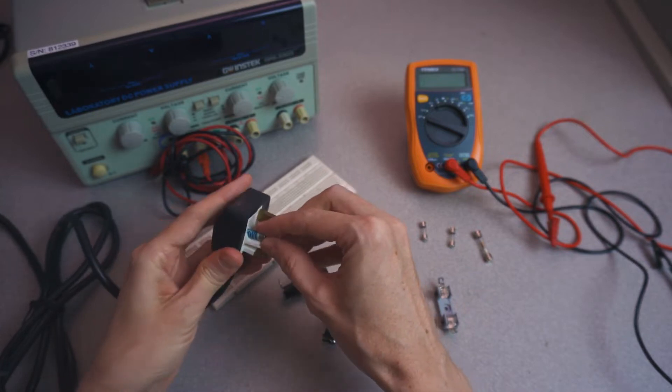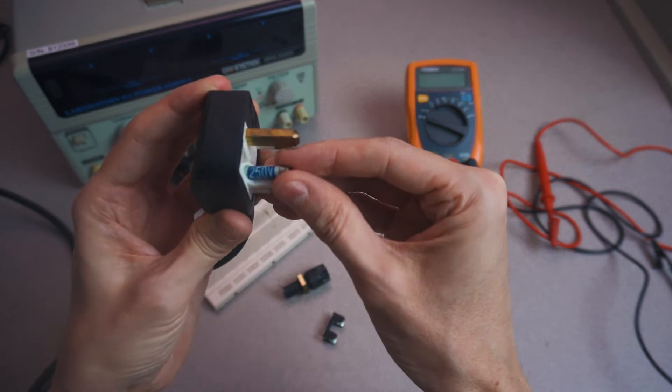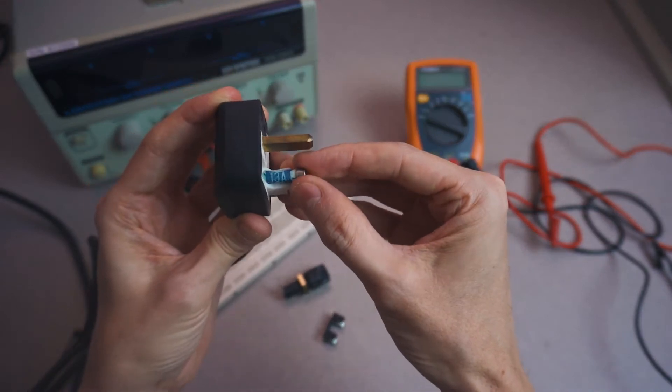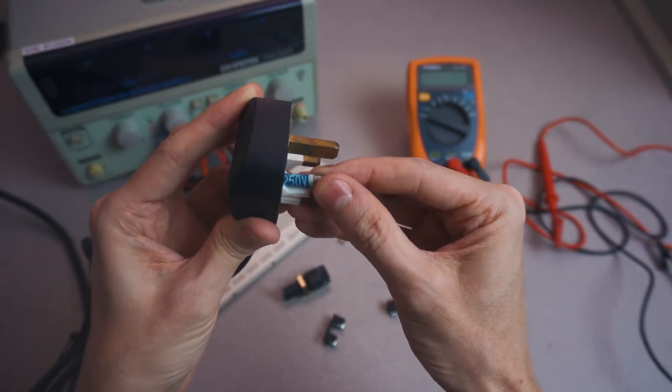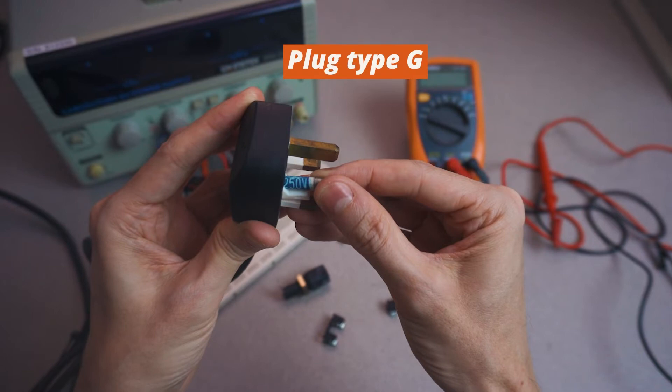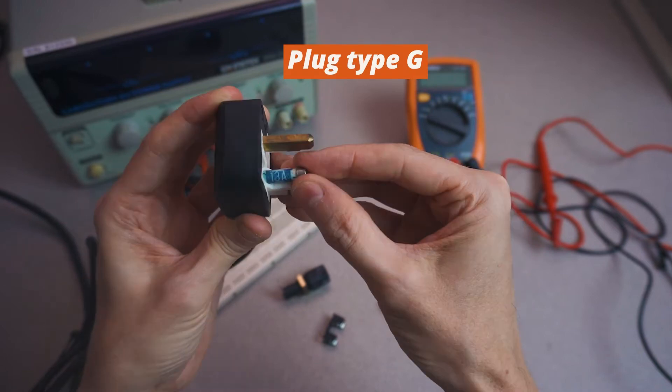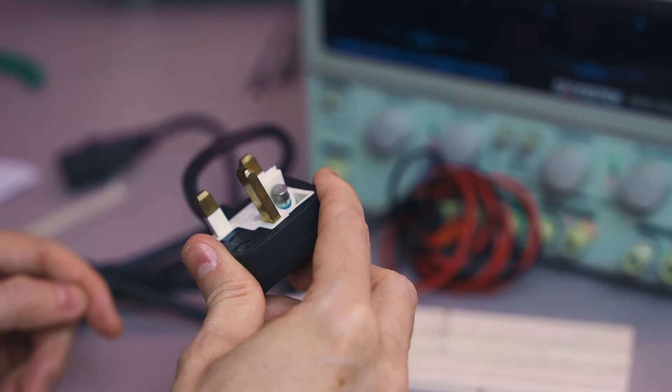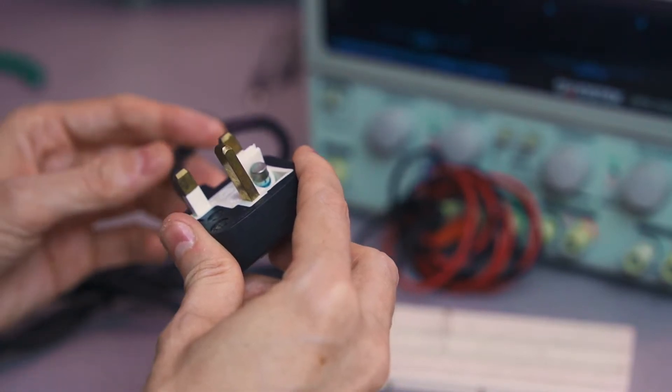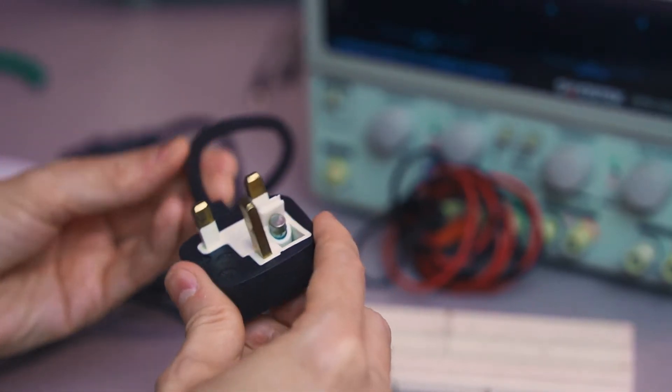For example, this is the cord for our oscilloscope, and it has a fuse here that's rated 13 amperes, 250 volts. It doesn't mean that our oscilloscope uses 13 amperes of current, but it does mean that 13 amperes would probably not be a safe amount of current to flow through this particular cord.